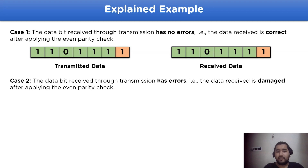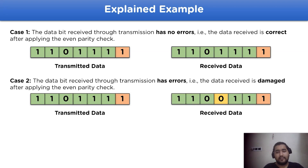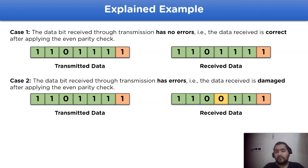The second case: the data bit received through transmission has errors, meaning the data received is damaged. After applying the even parity check, the received data has a zero instead of one, which means the number of ones becomes five — this does not match the even parity check, so an error is detected.